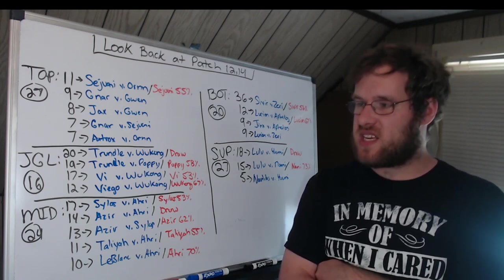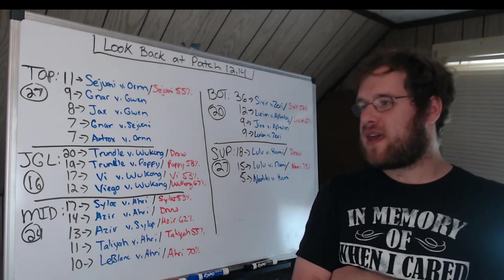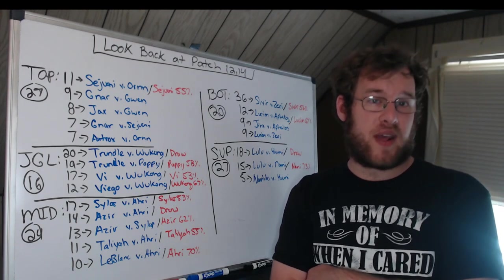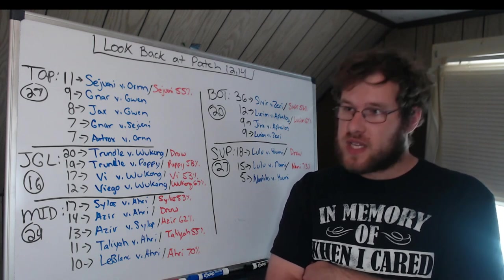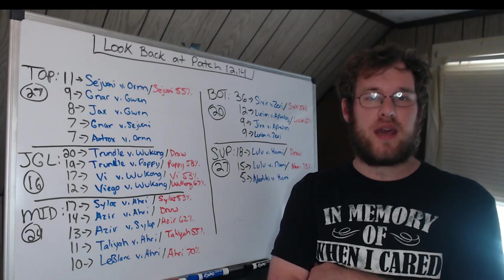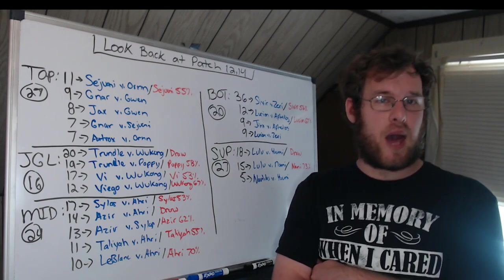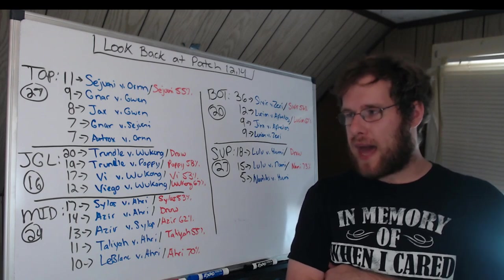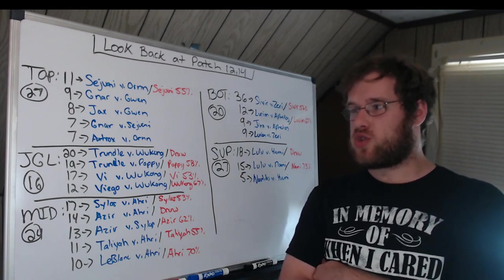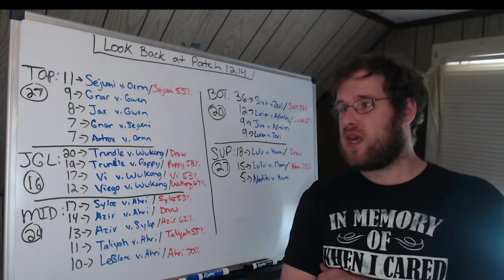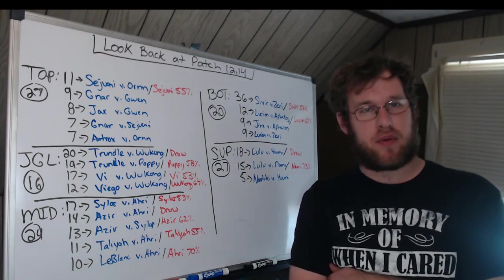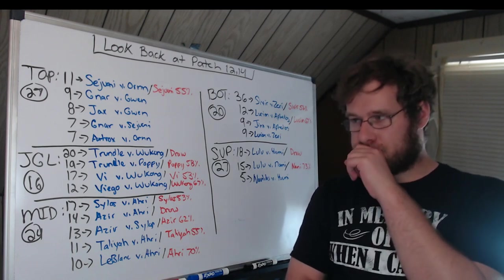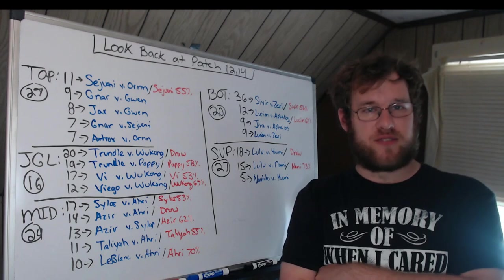Jungle had 16 different champions picked. Trundle versus Wukong was the most common matchup, ending 10 to 10 — a draw. Over 20 games it could really go either way. The next three most common were Trundle versus Poppy, Vi versus Wukong, and Viego versus Wukong. If Wukong was banned, Trundle and Poppy rose to the top — that happened 19 times with Poppy winning 58%. Poppy was a very common matchup on 12.15 as well, with Trundle first-picked a lot.